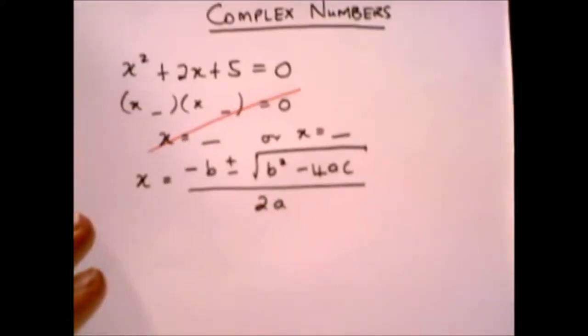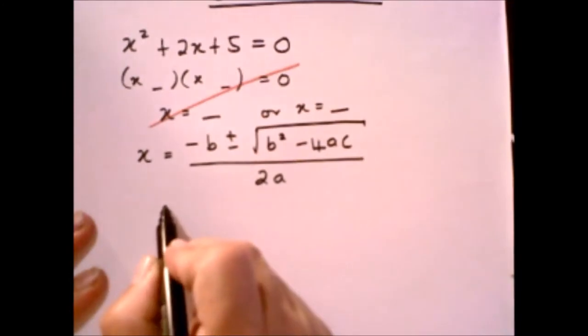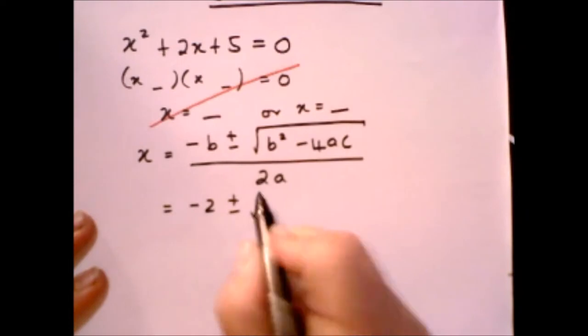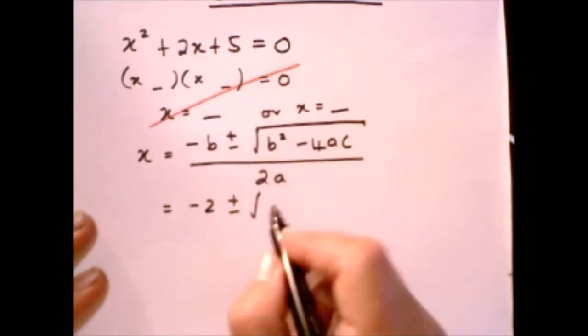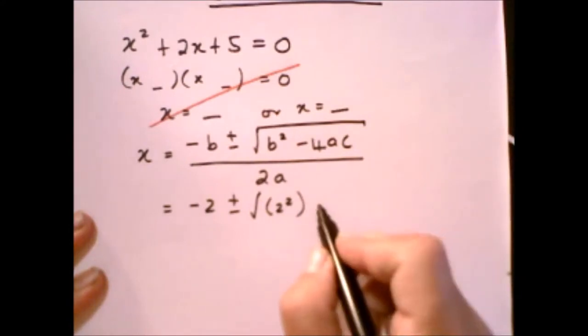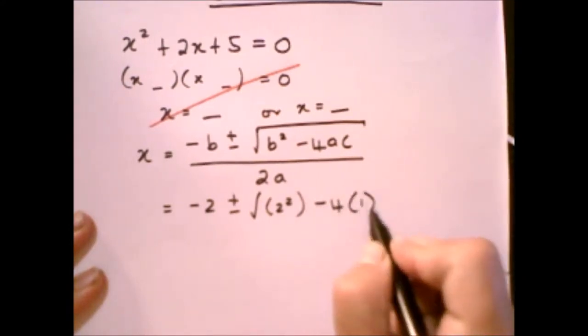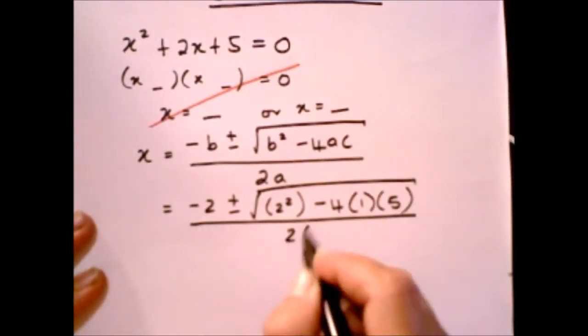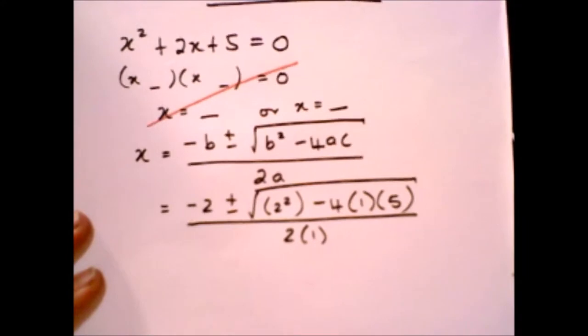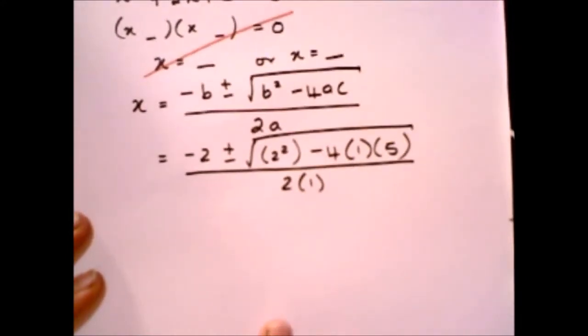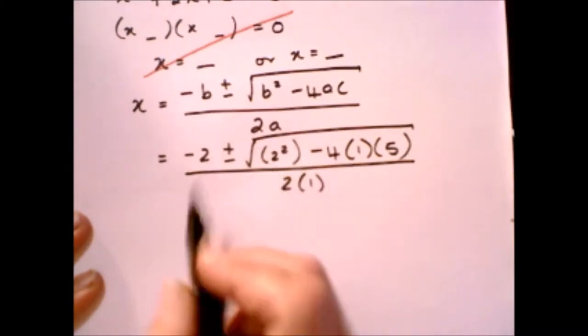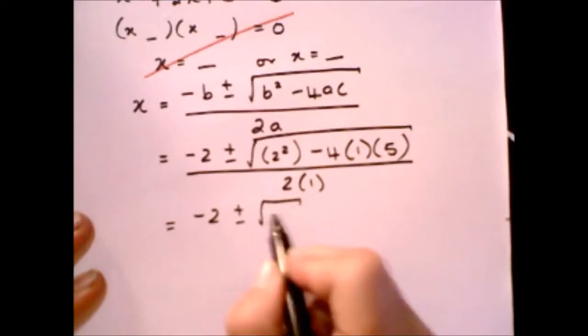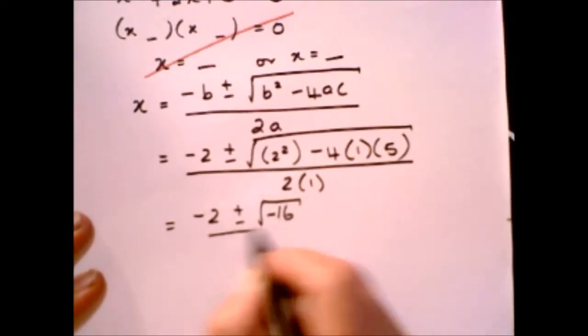If we substitute the values in now, we're going to get minus 2 plus minus square root of 2 squared minus 4 times 1 times 5, all over 2 times 1. If we simplify this you'll get minus 2 plus minus the square root of minus 16 over 2.